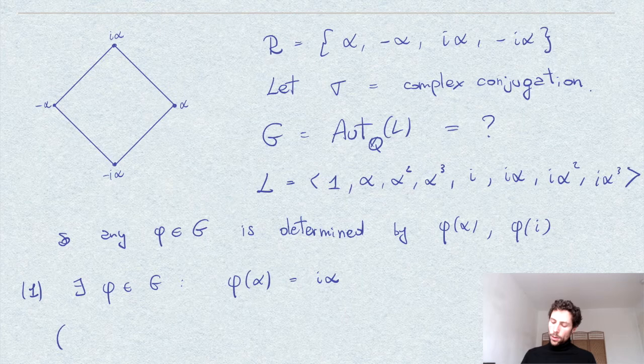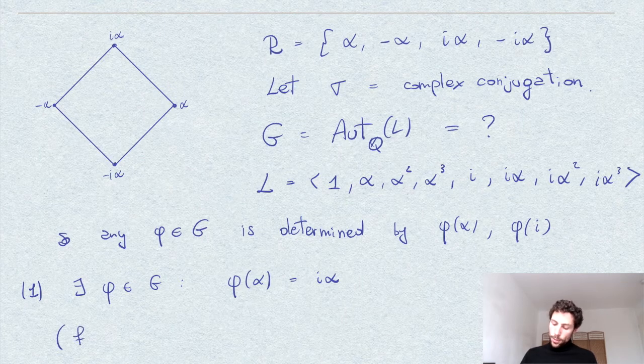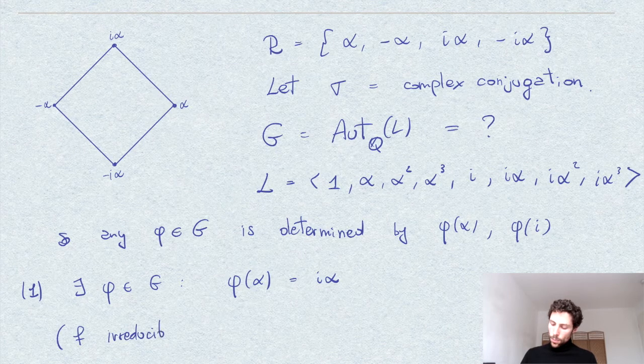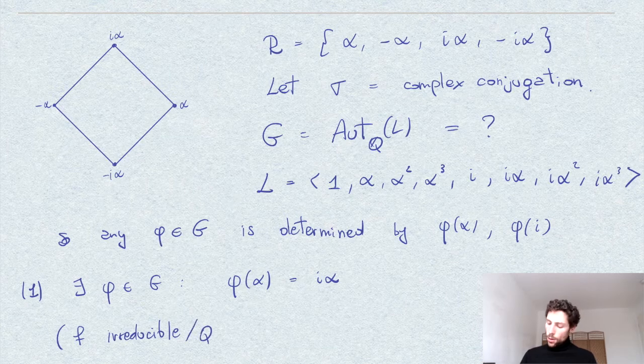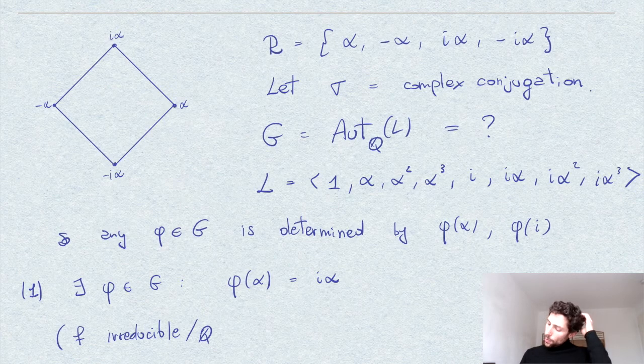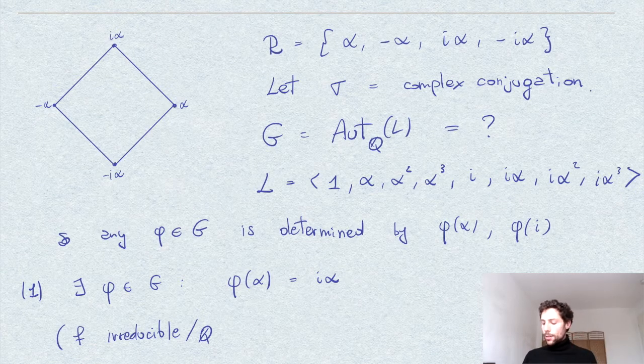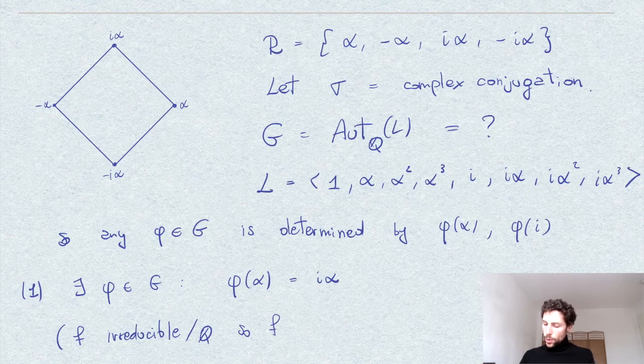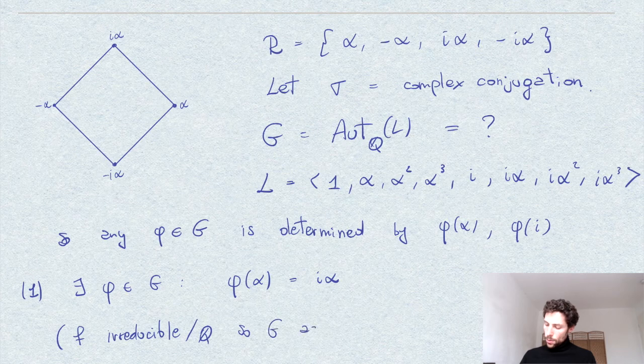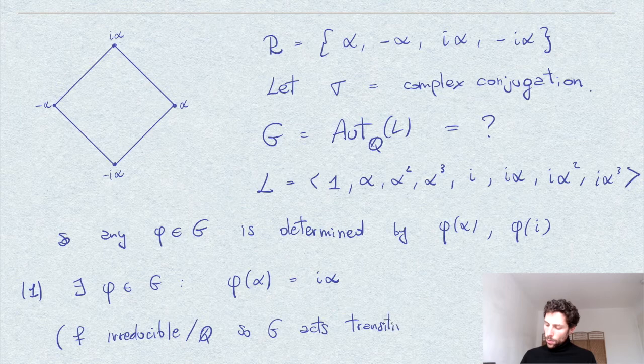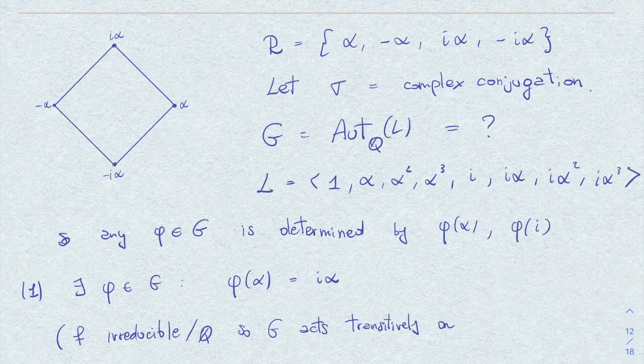So let me repeat here. The argument is that whenever you have, so because f is irreducible over Q, over the ground field, then the Galois group G of L acts transitively on the roots of f, on R.